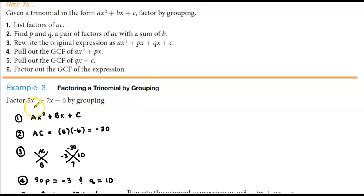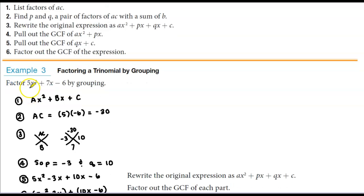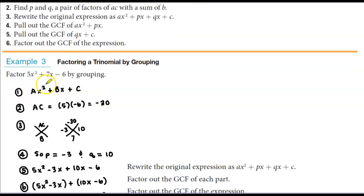In example 3, we want to factor 5x² + 7x - 6 by grouping. First, we ask: can we factor out a greatest common factor with all three terms? We don't see anything to factor out. We also notice that the leading coefficient 5 is not 1, so we'll use the AC method.